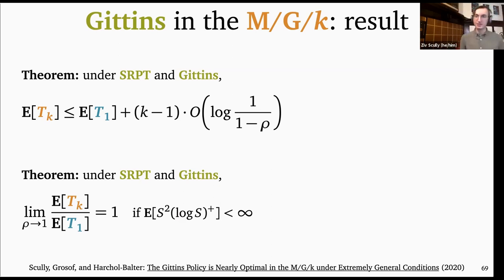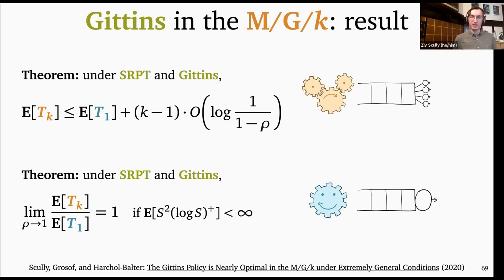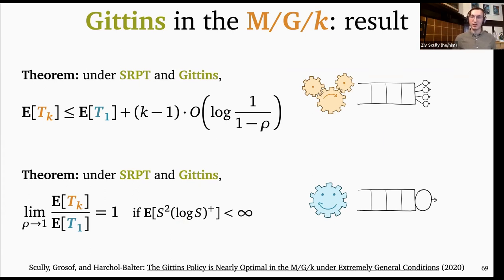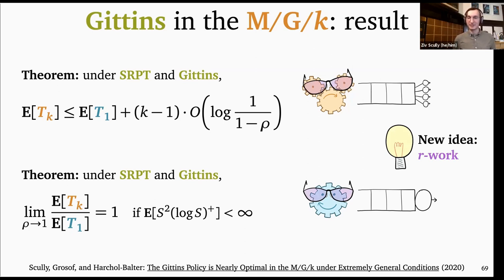These are the results we were able to show. The main difficulty is figuring out how to couple the MGK to the MG1 — we know we're going to give them the same arrival processes, but the question is how to translate that into having similar response times. The new idea we are going to tell you about, which we call R-work, is a new way of looking at queuing systems. It has shown up in various guises in the past, but by clarifying it, we were able to prove much more general results.